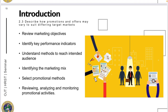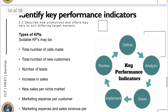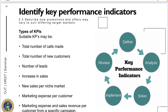Now let's proceed to learning objective 2.3: describing how promotions and offers may vary to suit differing target markets. Now that you have identified niche markets in which to focus your promotional activities, it is time to develop a promotional strategy to meet the objectives of the organization. The steps include reviewing marketing objectives, identifying key performance indicators, understanding methods to reach the intended audience, identifying the marketing mix, selecting promotional methods, and reviewing and monitoring promotional activities.